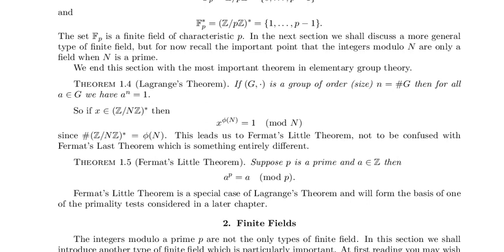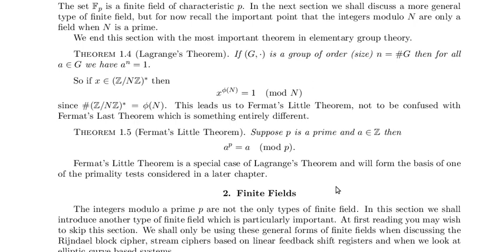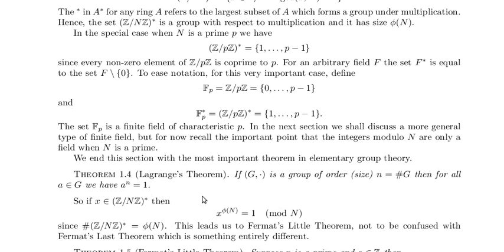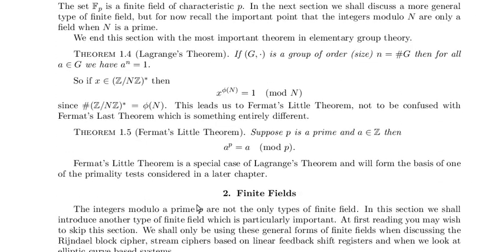This leads us to Fermat's little theorem — not to be confused with Fermat's last theorem, which is something entirely different. Theorem 1.5: Suppose p is a prime and a is an element of the integers Z; then a to the p equals a mod p. Fermat's little theorem is a special case of Lagrange's theorem and will form the basis of one of the primality tests in a later chapter. Since these theorems have names, they're important and will be used over and over again.